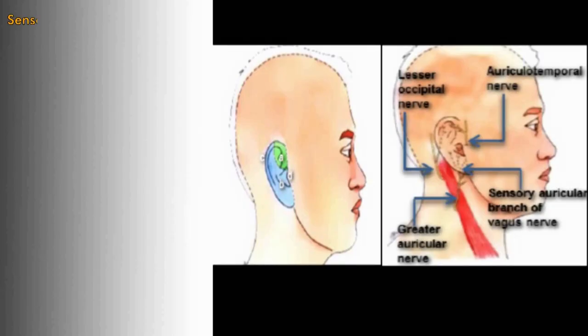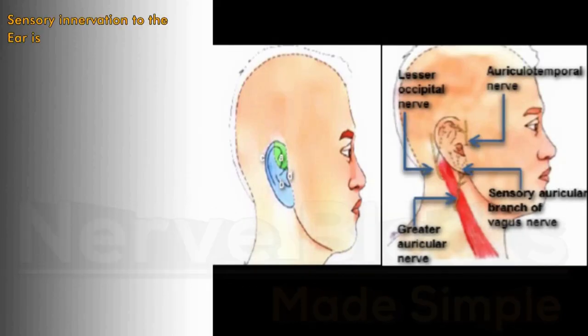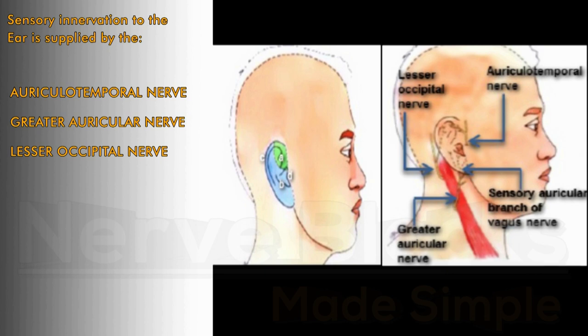Nerve block to the ear. Sensory innervation to the ear is supplied by the auriculotemporal nerve, greater auricular nerve, lesser occipital nerve, and auricular branch of the vagus nerve.